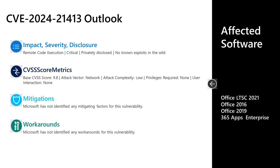Next is CVE-2024-21413, a critical remote code execution vulnerability privately disclosed to Microsoft with no known exploits in the wild. It has a base score of 9.8; the attack vector is over the network, attack complexity is low, privileges required is none, and user interaction is none. Notably, the preview pane is an attack vector — the user doesn't have to open the file, they just have to preview it within Outlook's preview pane. Affected software is Office 2016, 2019, Office Long-Term Servicing Channel 2021, and 365 Apps for Enterprise. There are no documented mitigations or workarounds.